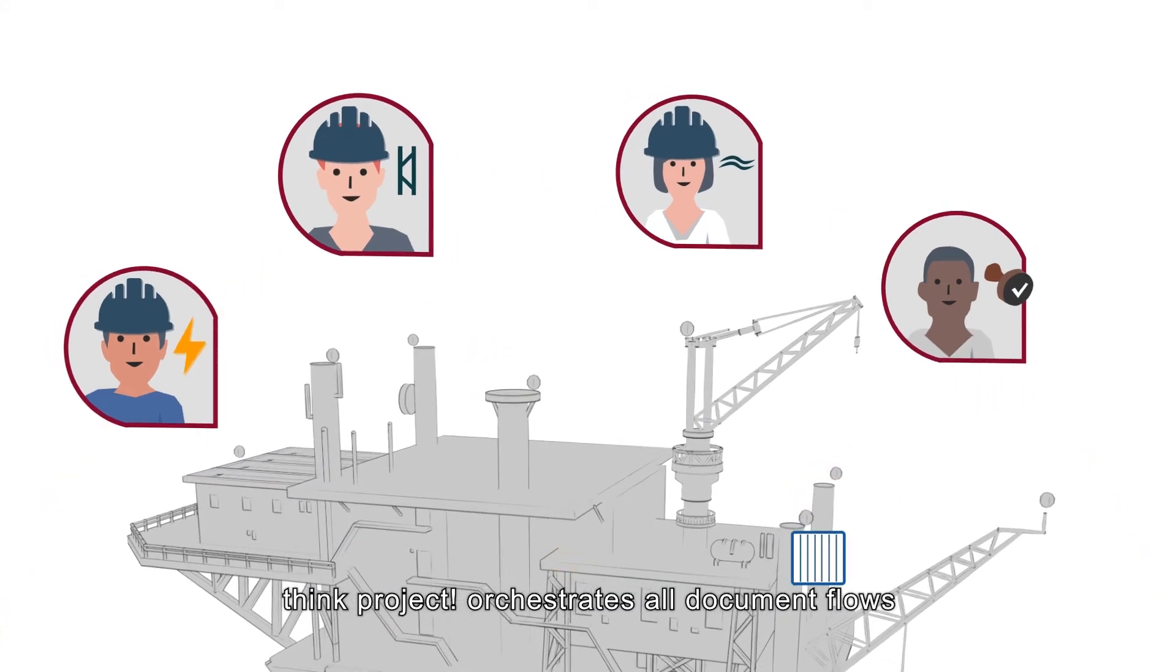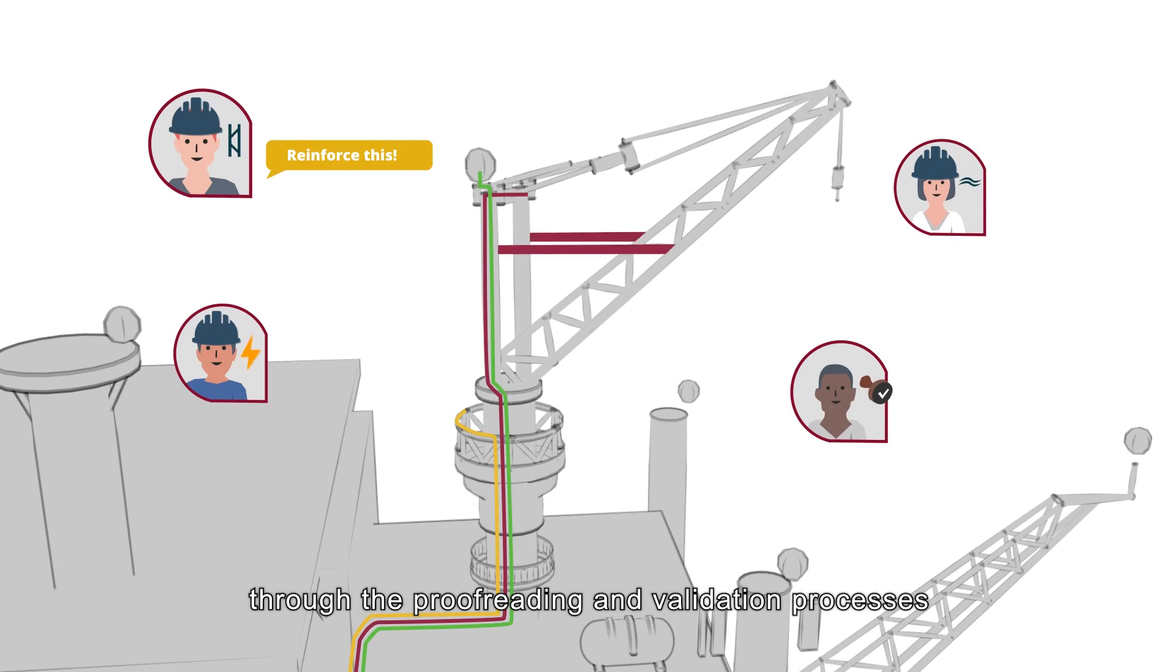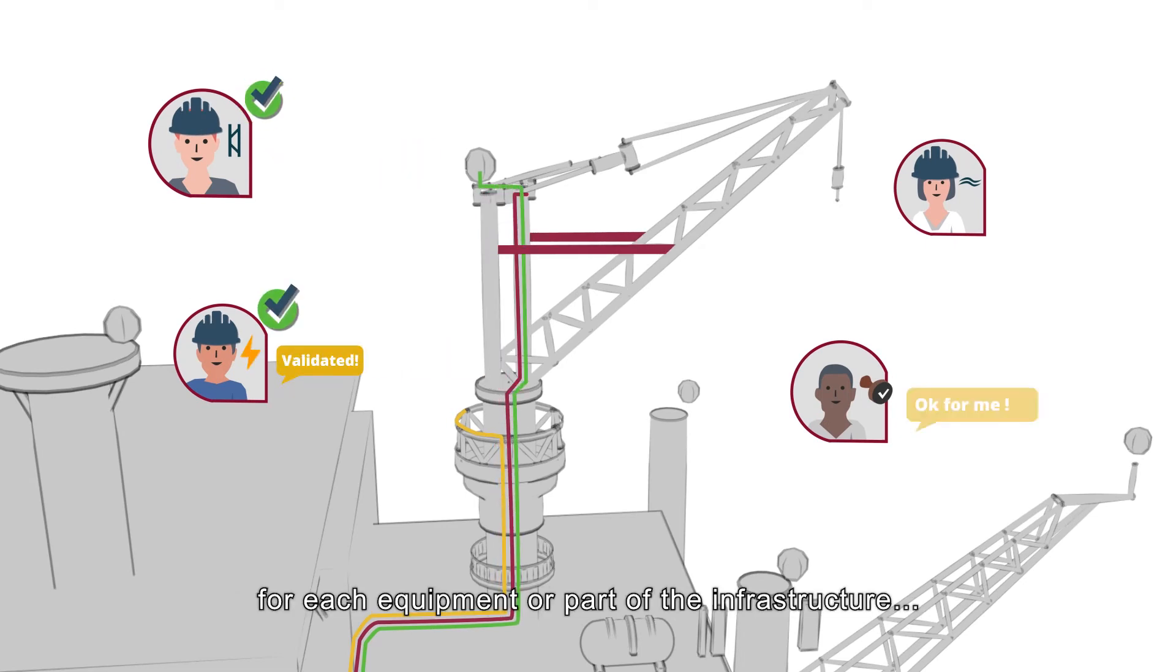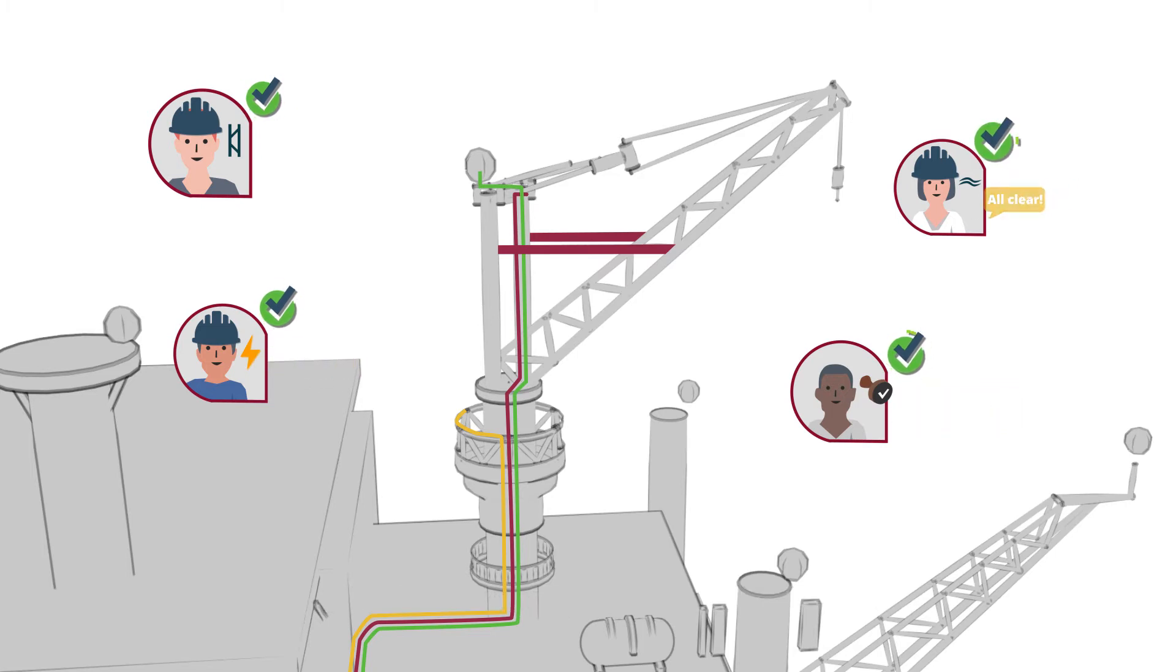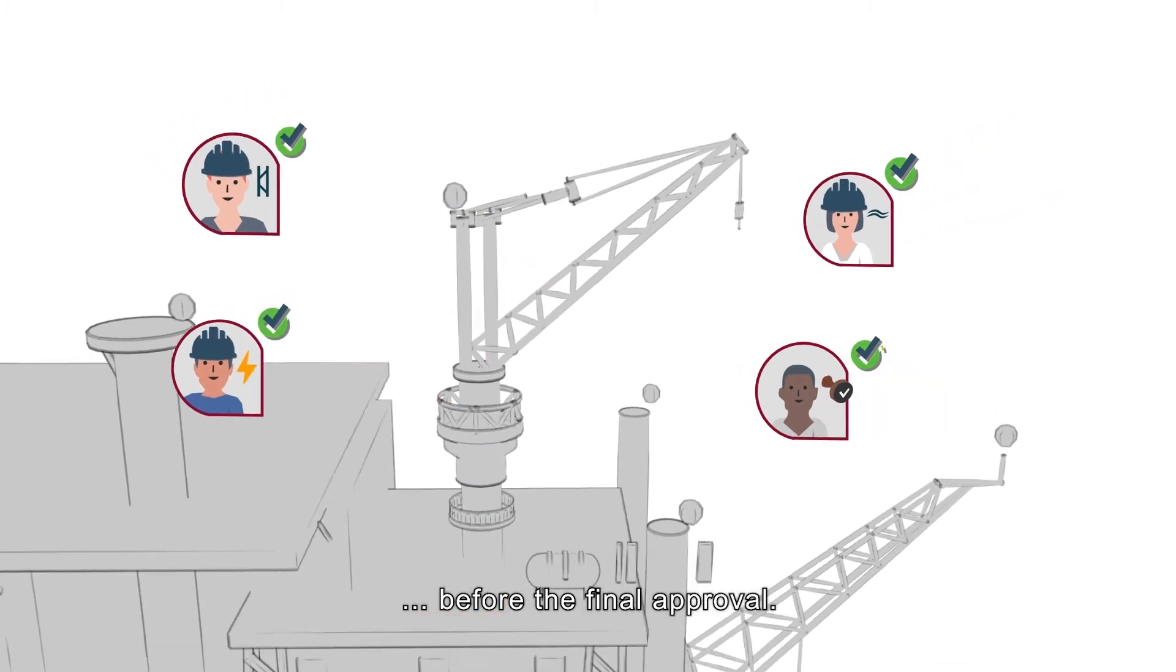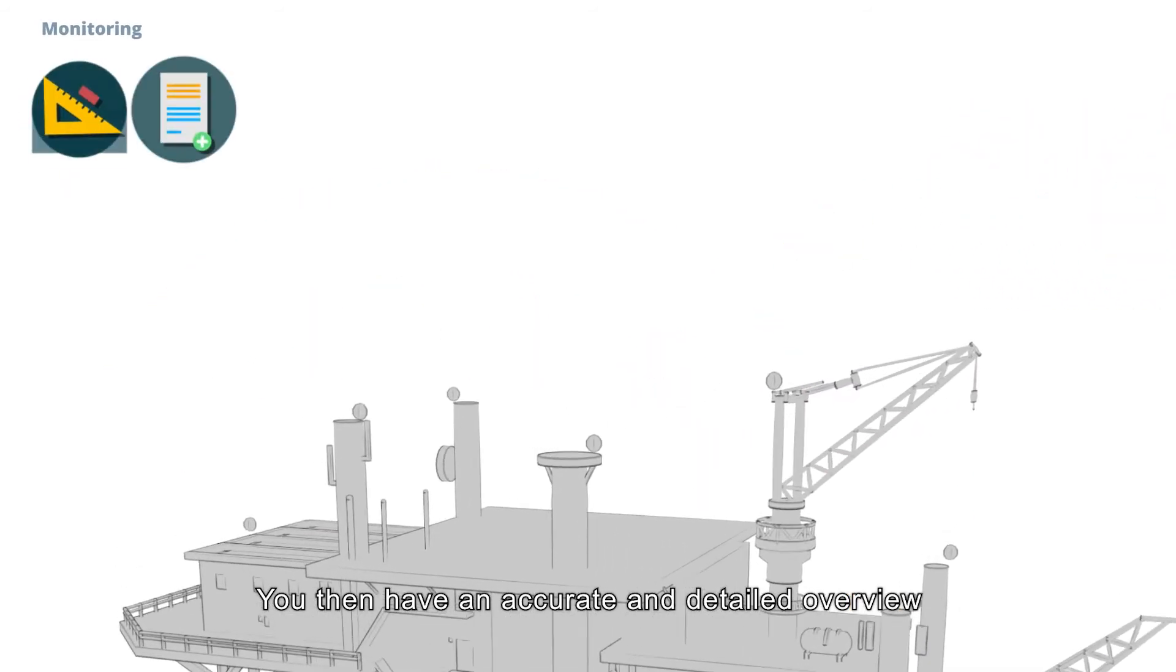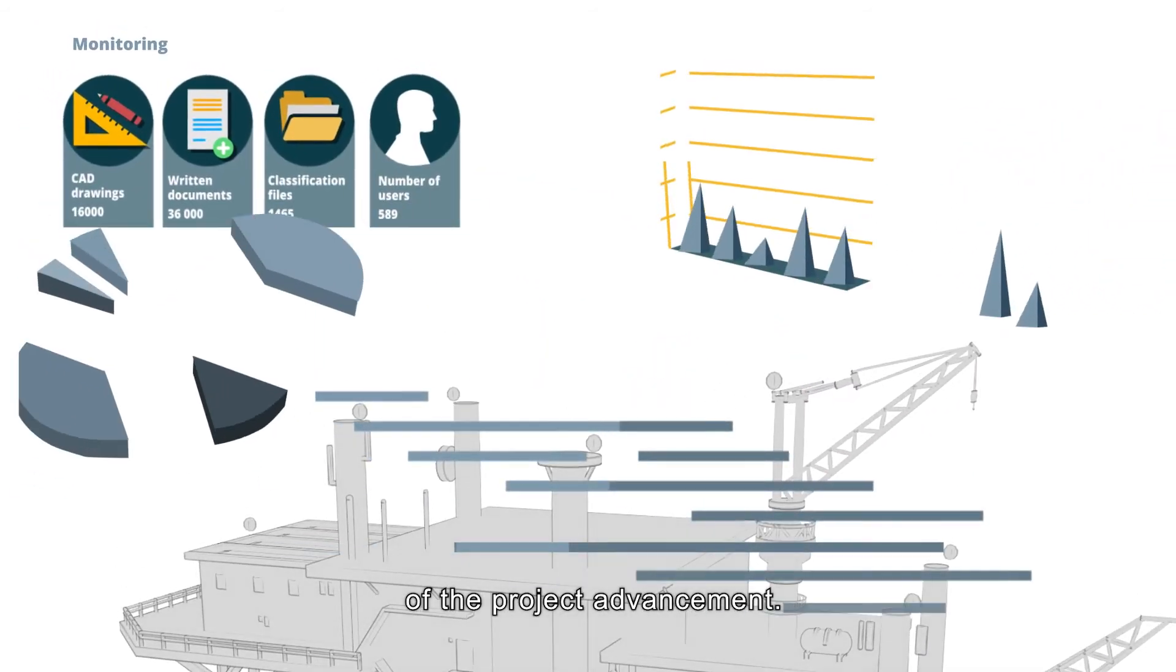ThinkProject orchestrates all document flows through the proofreading and validation processes for each equipment or part of the infrastructure. Before the final approval, you then have an accurate and detailed overview of the project advancement.